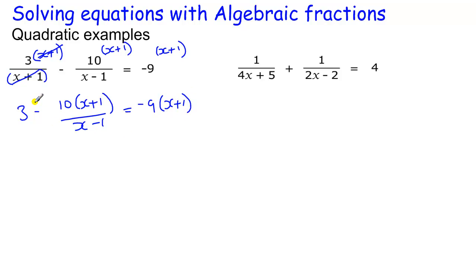Times by the x minus 1, so we times that by x minus 1, times this by x minus 1, and times this by x minus 1. That means this will cancel to leave me with 3 lots of x minus 1 minus 10 lots of x plus 1, which equals minus 9 lots of x plus 1 times x minus 1.